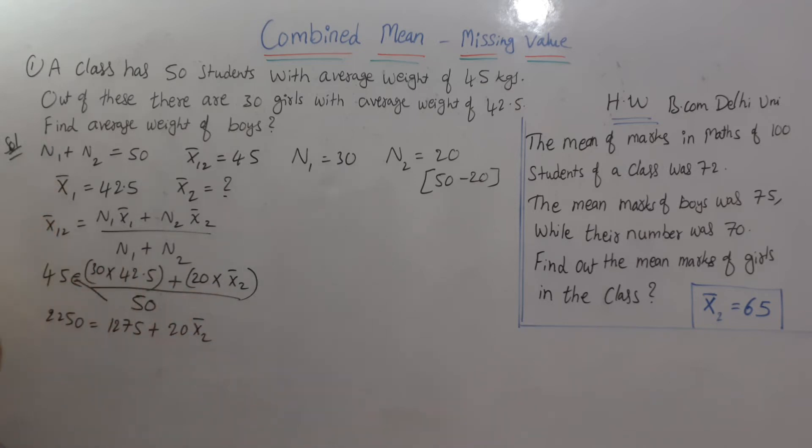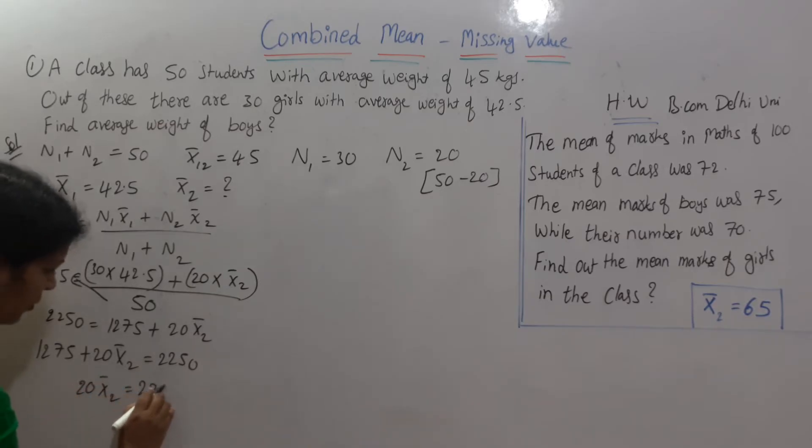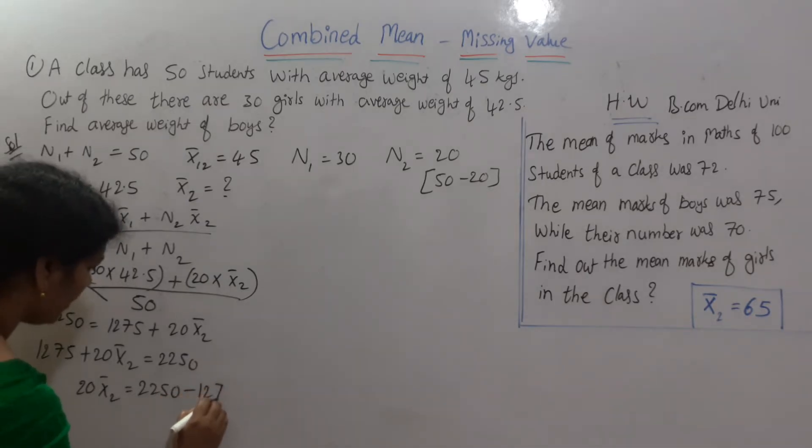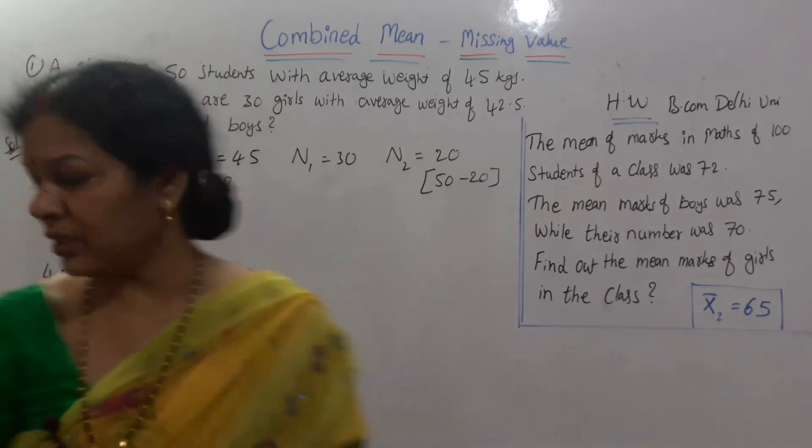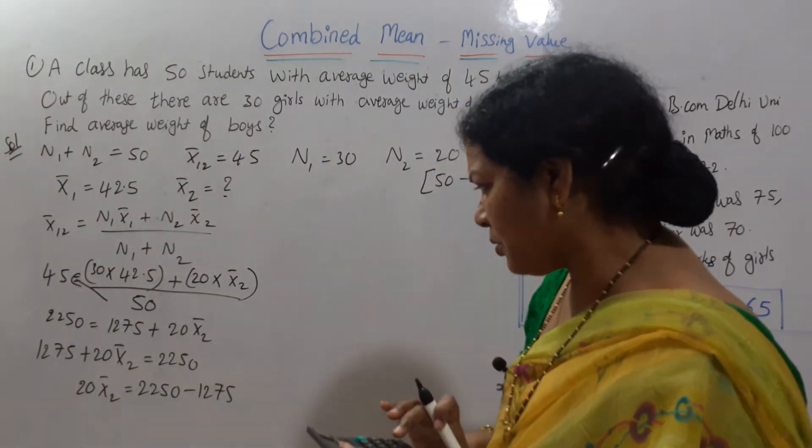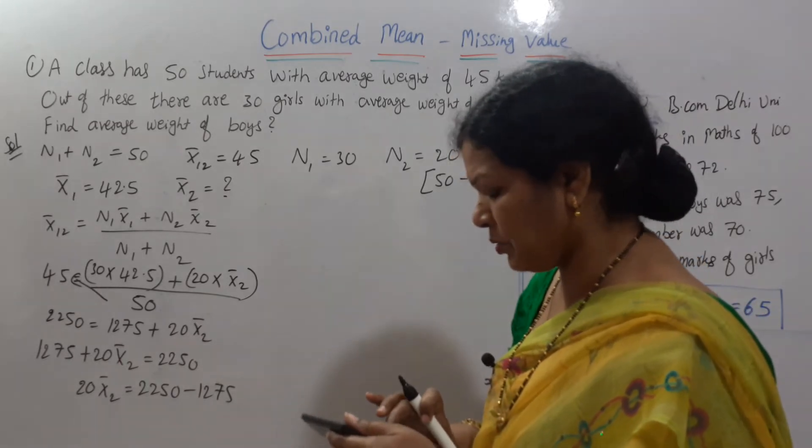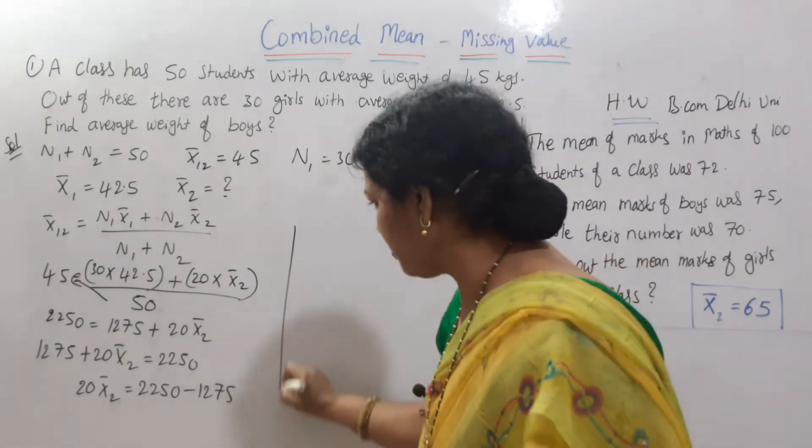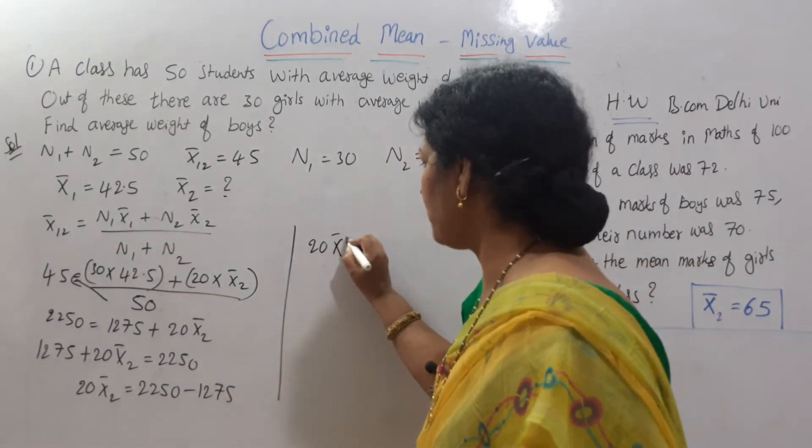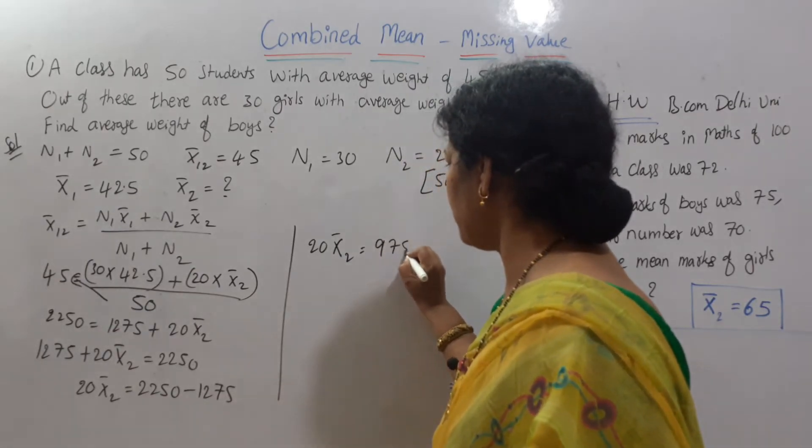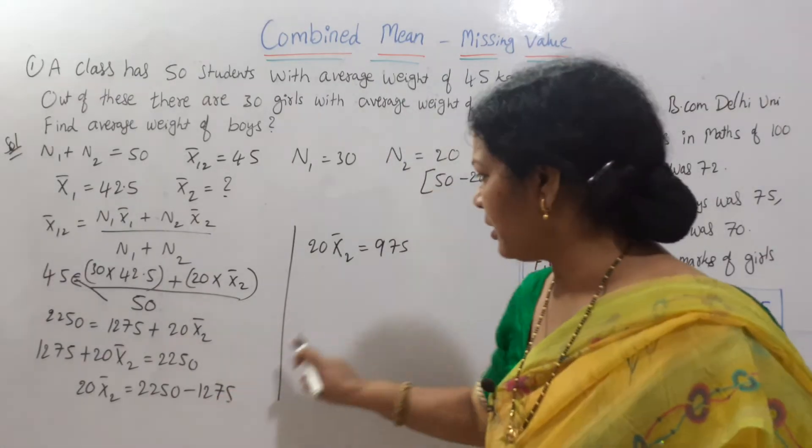We will take it on the left side, this one, because we need to find out X bar 2. So we will write like this: 1275 plus 20 X bar 2 is equal to 2250. Now 1275 we can take it to the right side. 20 X bar 2 is equal to 2250 minus 1275. So I will continue here. If we minus 1275 minus 2250, the difference is 975. So next step is here.